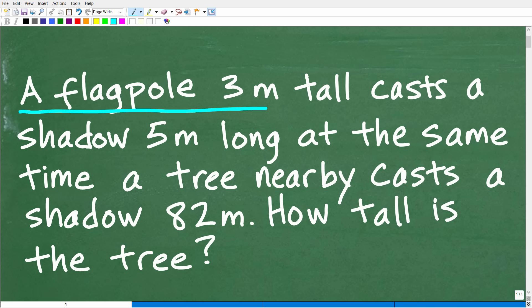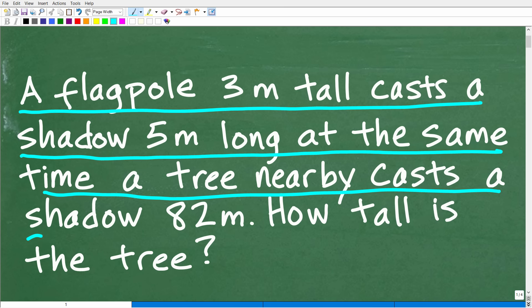A flagpole three meters tall casts a shadow five meters long. At the same time, a tree nearby casts a shadow of 82 meters. How tall is that tree?